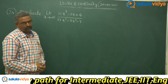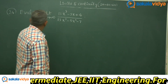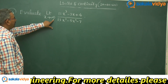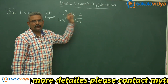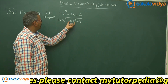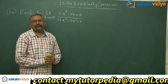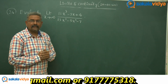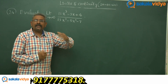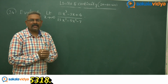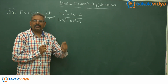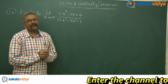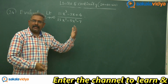Let us solve one more problem. Evaluate limit x tends to infinity of 11x cube minus 3x plus 4, divided by 13x cube minus 5x square minus 7. The degree of the numerator is 3 and the degree of the denominator is also 3. So divide both numerator and denominator by x cube and apply the limit to get the answer.